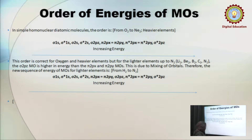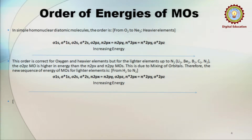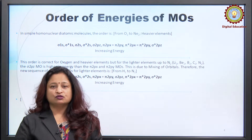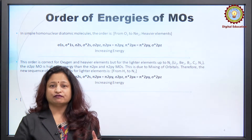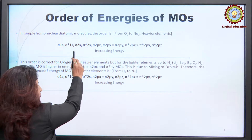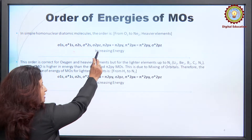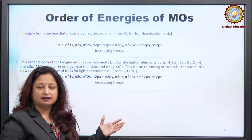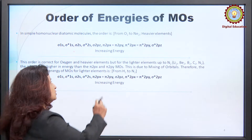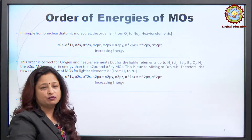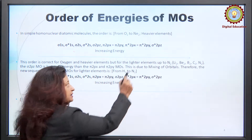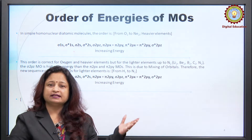Heavier elements means atoms from O₂ to Ne₂ — that is, molecules having 14 or more electrons. For this category, the order of energies of molecular orbitals is: σ1s, σ*1s, σ2s, σ*2s, σ2pz — where pz is along the molecular axis — then π2px and π2py at the same energy level, followed by the anti-bonding π*2px, π*2py, and then σ*2pz.